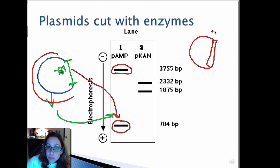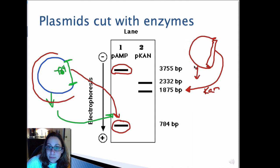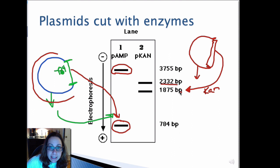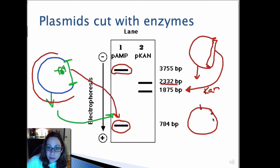When you cut P-CAN with your two enzymes and run the product on a gel, you get your large 1,875 base pair band containing the kanamycin resistance gene and the band from the remaining linearized plasmid at 2,332 base pairs. Whenever you have a question about plasmids and restriction enzyme cut sites, you should be able to figure out which enzymes are being used and how the cutting corresponds to bands on an agarose gel.